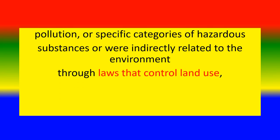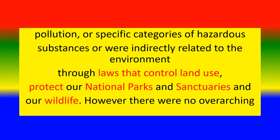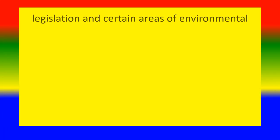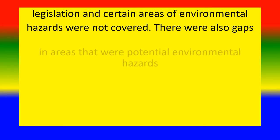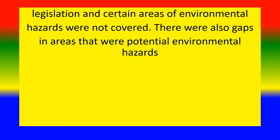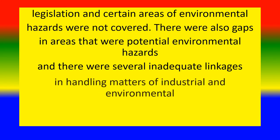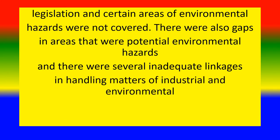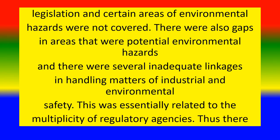Existing laws controlled land use, protected national parks, sanctuaries and wildlife. However, there were no overarching legislation, and certain areas of environmental hazards were not covered. There were also gaps in areas that were potential environmental hazards, and there were several inadequate linkages in handling matters of industrial and environmental safety.